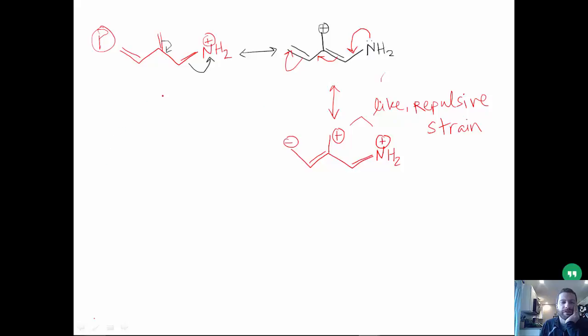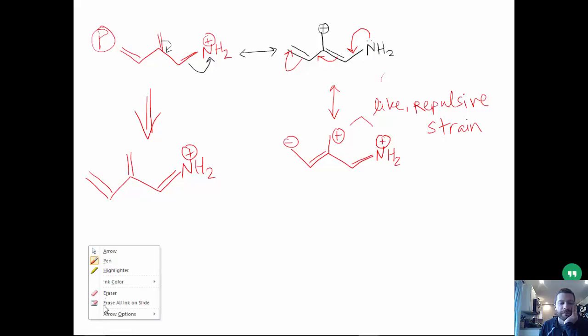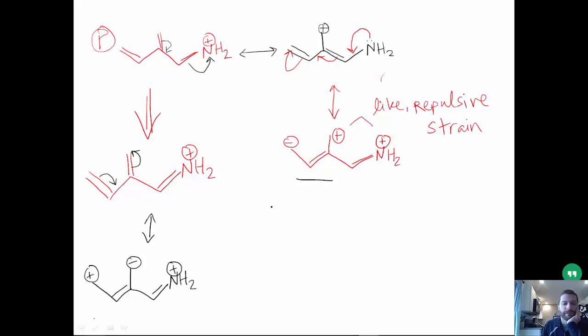If we go back to our original structure, there is one other form that you might have recognized for contributor. Or perhaps we could go like this. And this would result in the following structure. So this one, just like this one over here, we have three charges. But this time, they're staggered between positive, negative, positive. So this is a little bit more likely than this one over here.